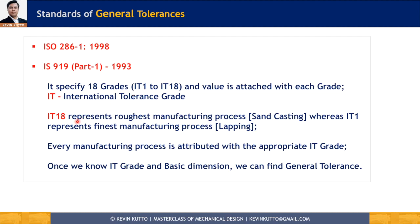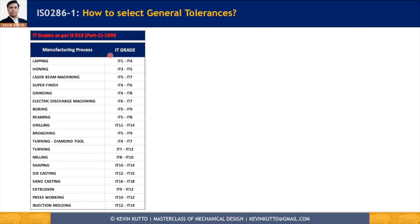The grades run from IT1 to IT18: IT1 represents the finest grade whereas IT18 represents the roughest grade. For example, IT18 could be the grade for sand casting, which is one of the roughest processes, whereas IT1 could be the grade for lapping, which is one of the finest processes. Every manufacturing process is attributed with an appropriate IT grade, and once we know the IT grade and the basic dimension from CAD, we can easily find the general tolerance using ISO 286.